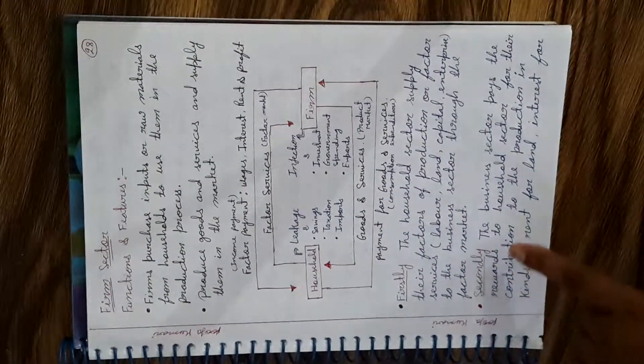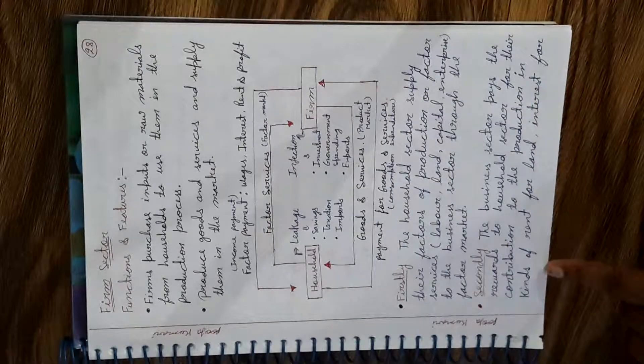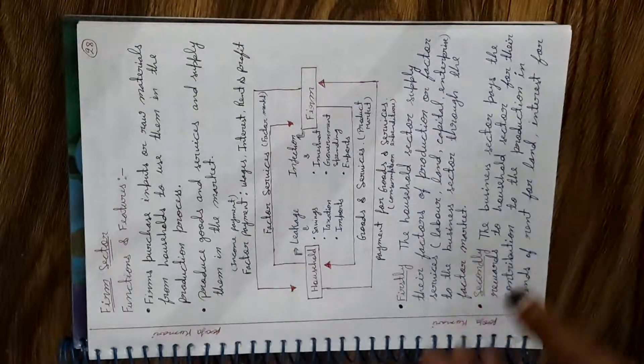Secondly, the business sector pays rewards to the household sector for their contribution to production in the form of rent for land, interest for capital, wages for labor, and profit for enterprise. Thirdly, the business sector supplies goods and services in the goods and product market — that is the final output. Fourthly, the household sector pays their income for consumption expenditure. In this way, you have to write it in your exam.